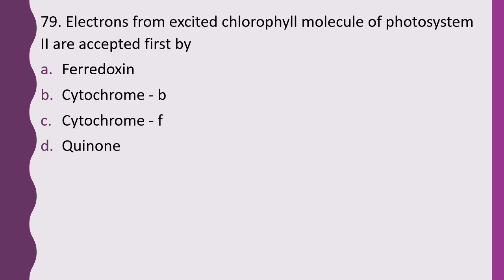Question 79. Electrons from excited chlorophyll molecule of photosystem II are accepted first by: ferredoxin, cytochrome B, cytochrome F, or quinone. The correct answer is option D, quinone.